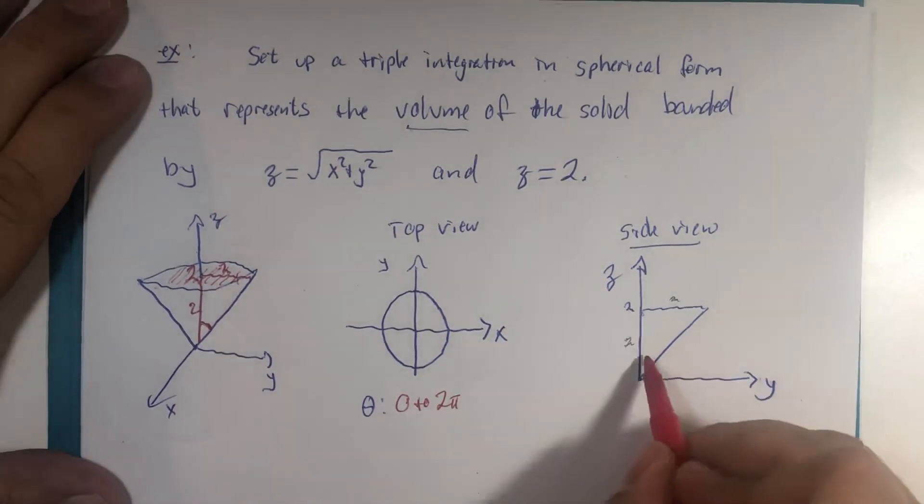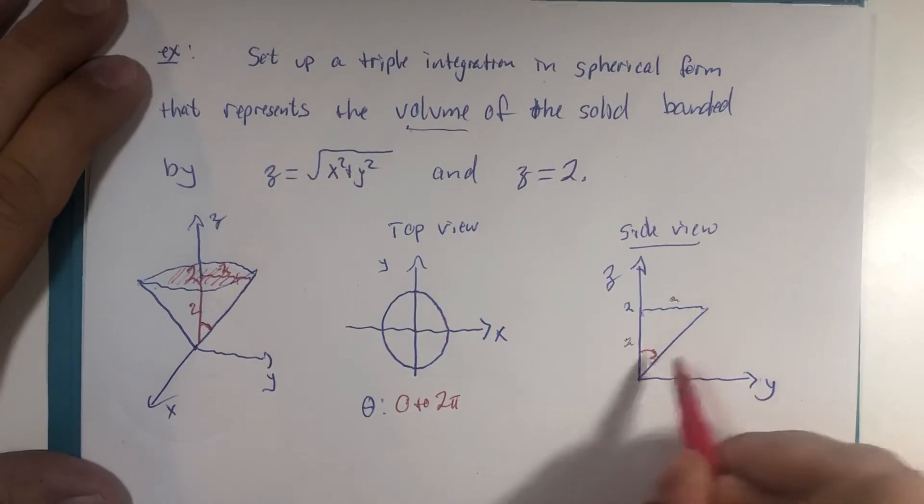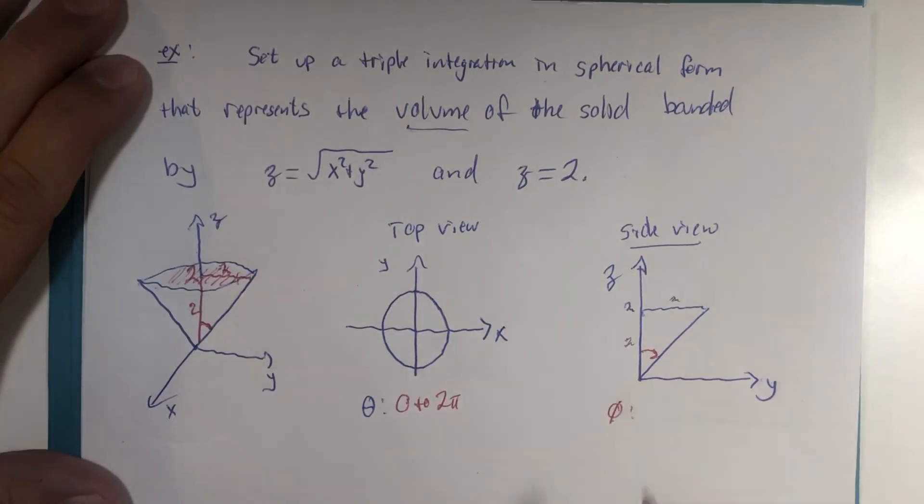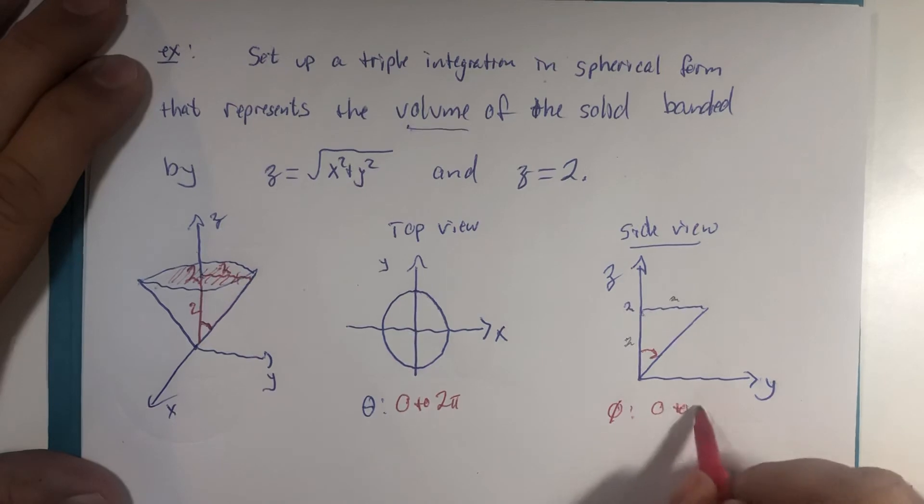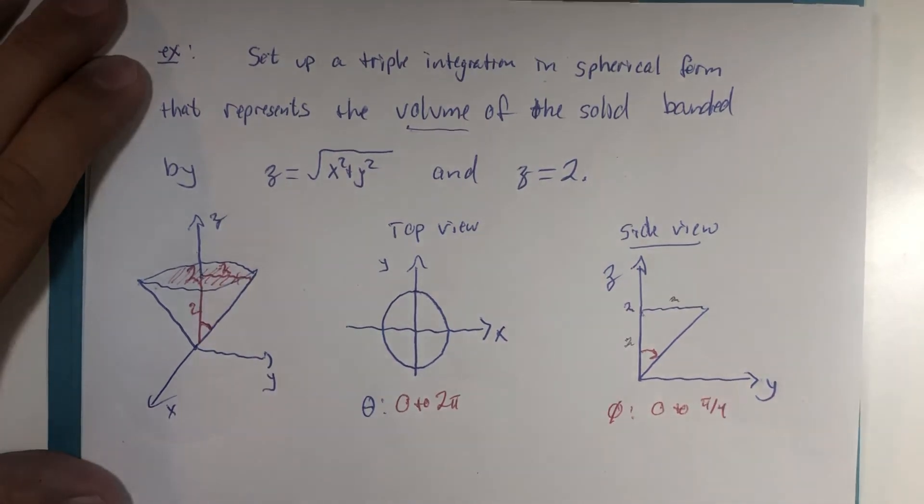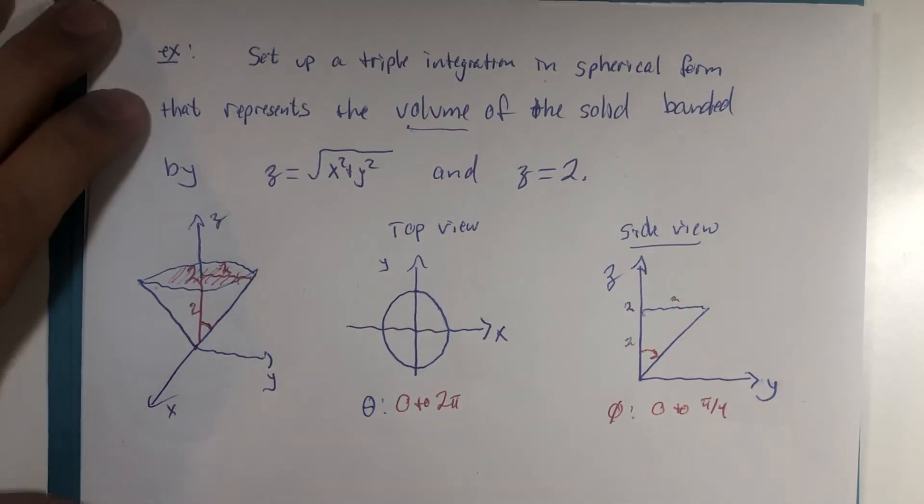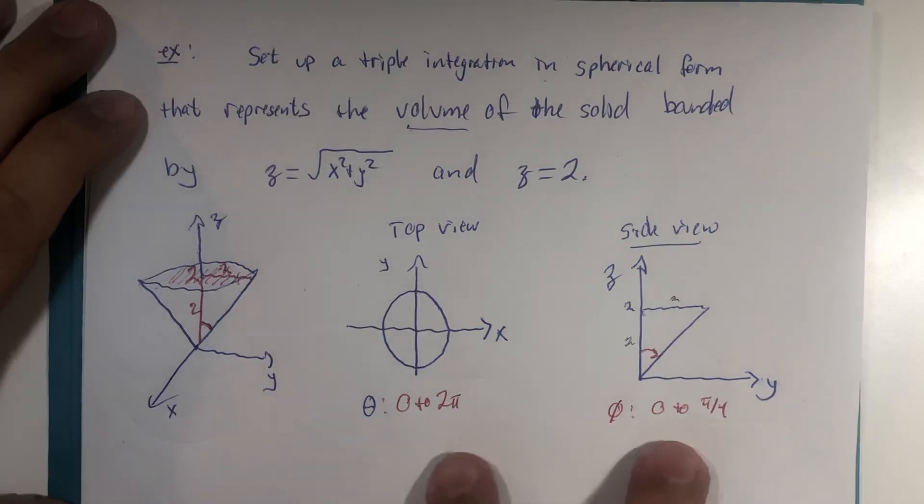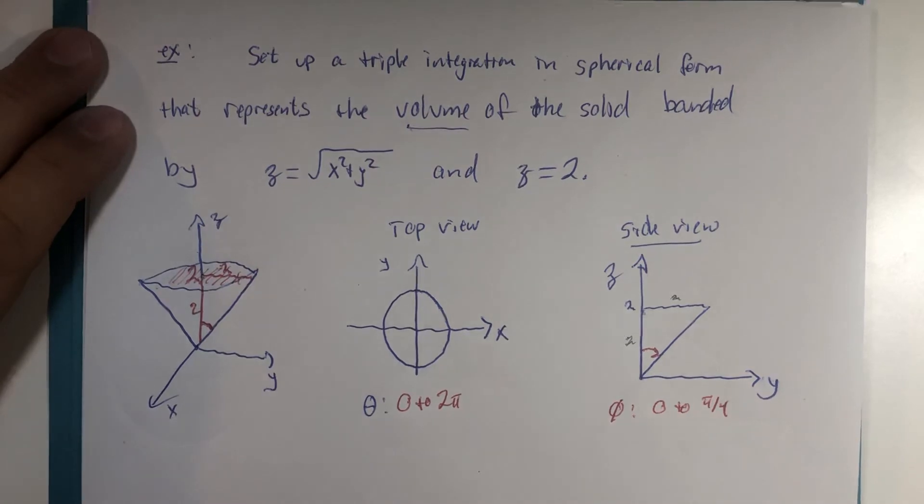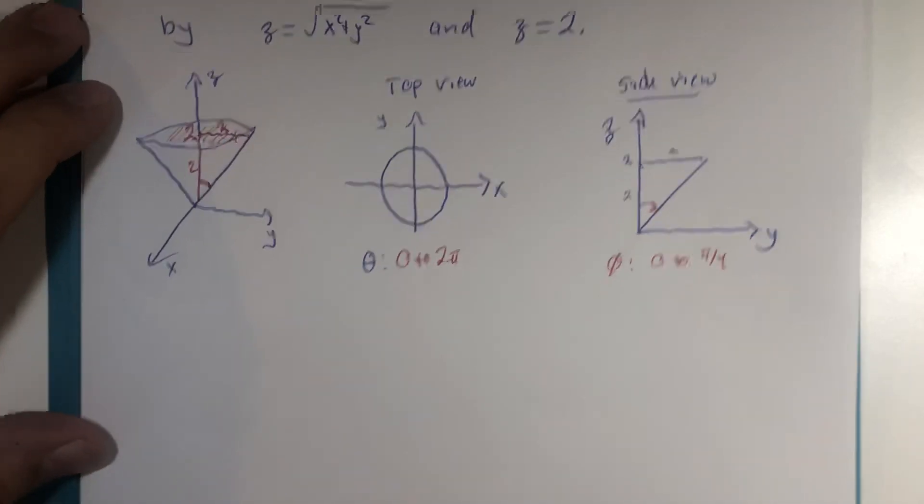And the angle phi is 0 to π divided by 4. So I have two of the three sets of information I need for my triple integral, but I want to do one more thing with a side view.